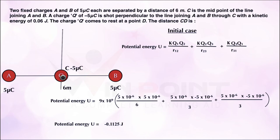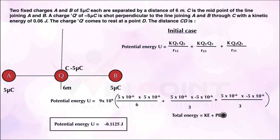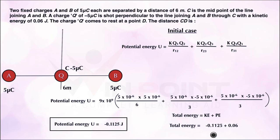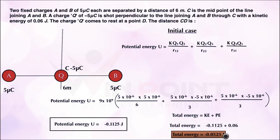The charge is also possessing kinetic energy, so the total energy is KE plus PE. The kinetic energy is 0.06 joule as given. So total energy equals minus 0.1125 plus 0.06, which gives minus 0.0525 joule. That is the total initial energy.